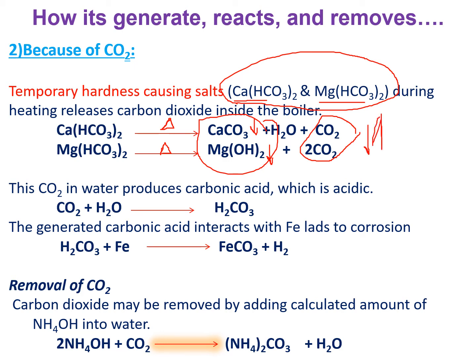The CO2 gas present in the boiler interacts with water and produces carbonic acid. This carbonic acid interacts with the iron and produces iron carbonate. Iron goes from metallic iron (zero state) to ionic iron (Fe2+) — this is corrosion. Iron is involved in corrosion by releasing hydrogen gas. From the electrochemical series, iron is an anodic material; it interacts with acids and produces hydrogen gas.